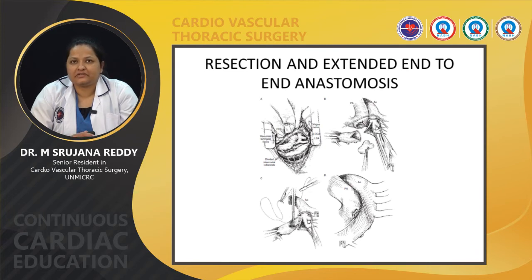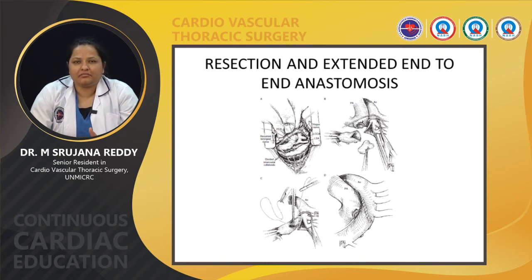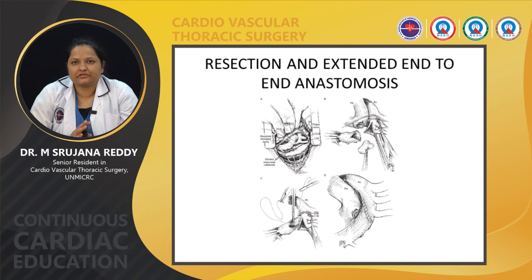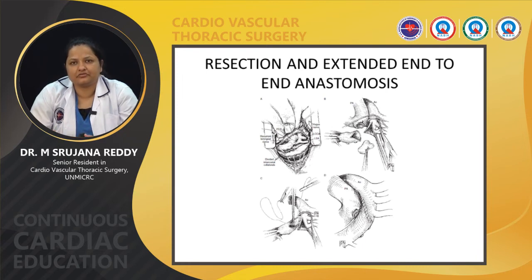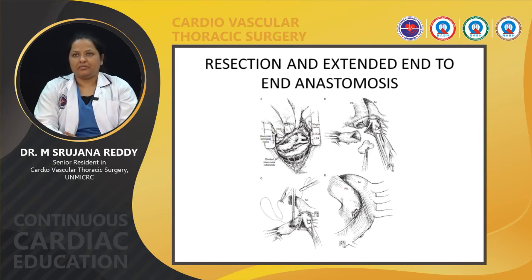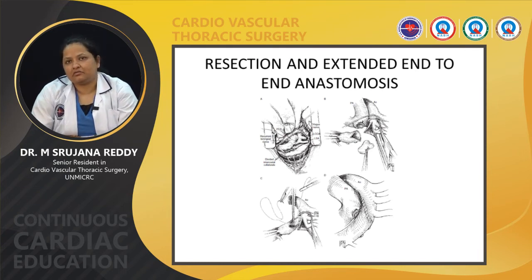Interposition grafting involves excision of the coarctated segment and placement of a prosthetic Dacron graft, usually used in older children and adults. In the resection with extended end-to-end anastomosis, the PDA is ligated, the coarctated segment is excised, the incision is extended to the undersurface of the distal arch, and the descending thoracic aorta is anastomosed directly to the undersurface of the distal arch, creating a wide anastomosis. This can be augmented with pericardial patches and has shown better results with lesser recoarctation rates.